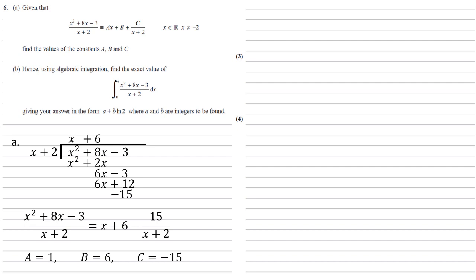So the question starts with hence, so we're going to use part a in this. So instead of integrating what we've been given, we're going to integrate the x plus 6 minus 15 over x plus 2 dx. So putting this in, the integral of x is a half x squared.